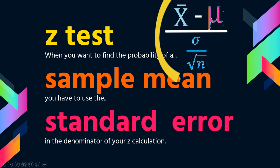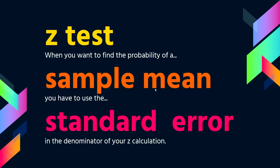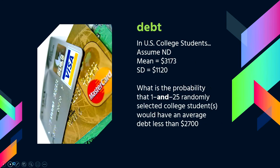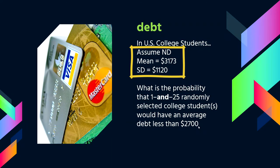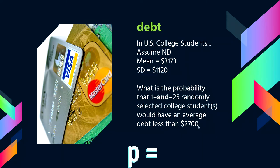The Z test allows you to find the probability of a sample mean. For example: what's the probability my sample would score 24 or lower? You might do a two-tail test. So problems might look like this: say in U.S. college students, debt is normally distributed with a mean of $3,173 and a standard deviation of $1,120. What is the probability that one, or 25, randomly selected college students would have an average debt less than $2,700?